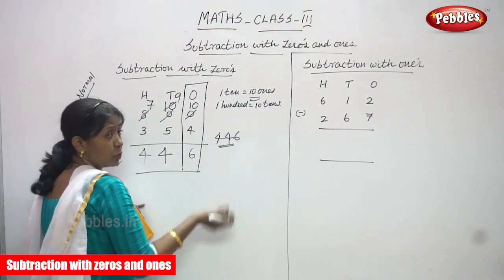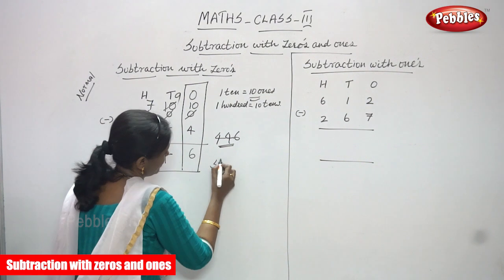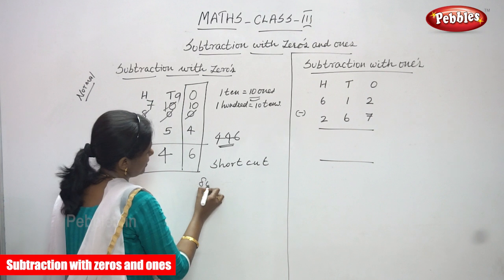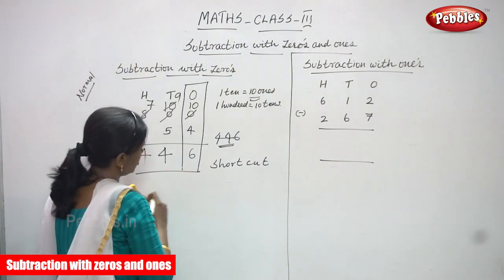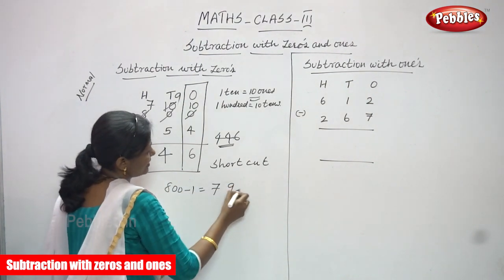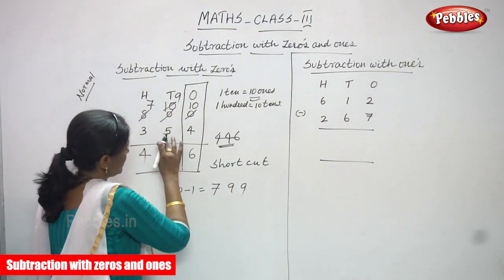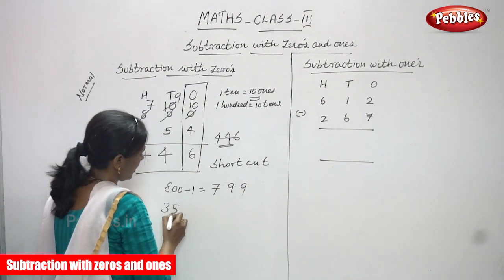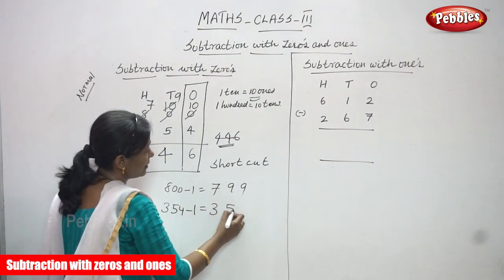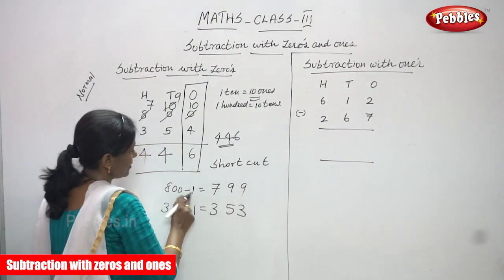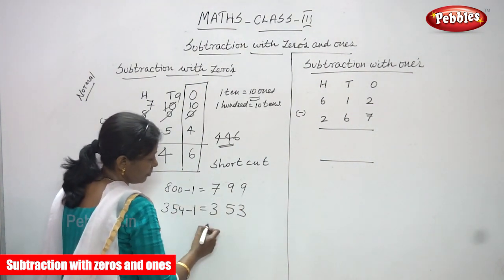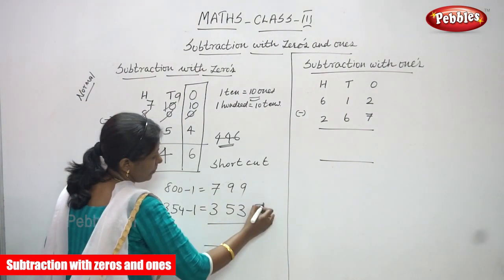So maybe it is difficult for you. I will tell you one more shortcut method. See, the first number is 800 — so 800 means what you are going to do? You have to subtract with one, you can get 799. Next is 354 — again you have to subtract with one, so 354 minus one, what will you get? 353. So 800 minus one you can get 799, and 354 minus one gives 353. So you have to subtract — it is very easy.